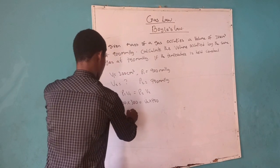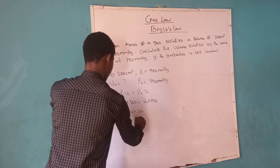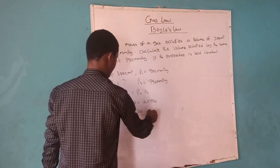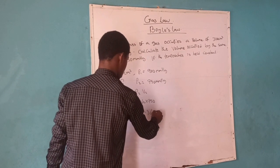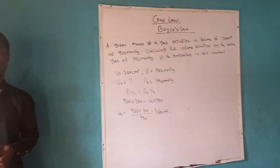So V2 is equal to 900 multiplied by 300, divided by 750. And then if I divide it, I'm going to have 360 centimeter cube.